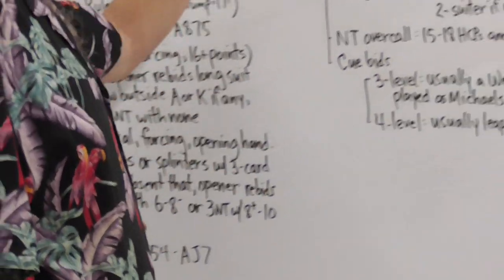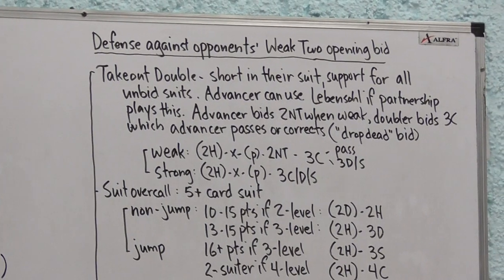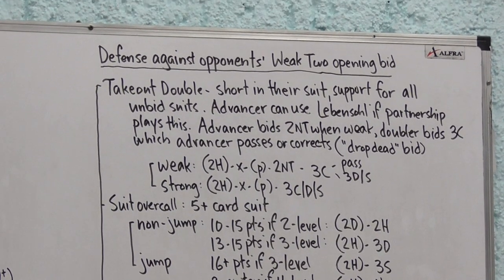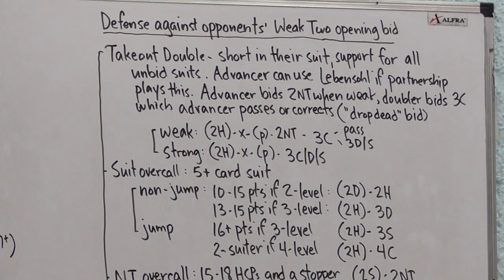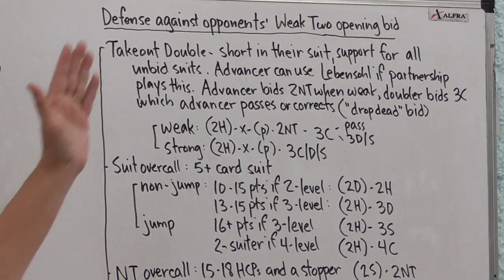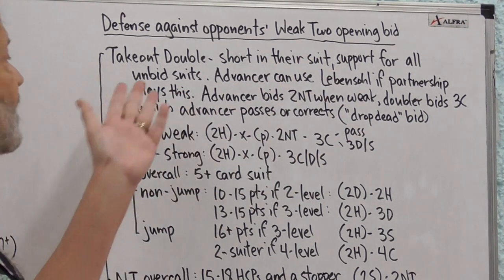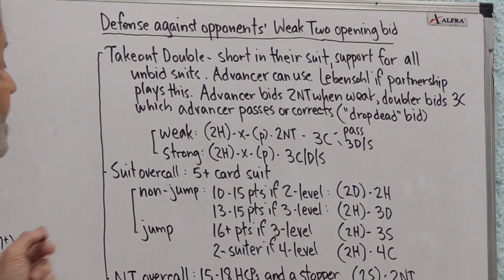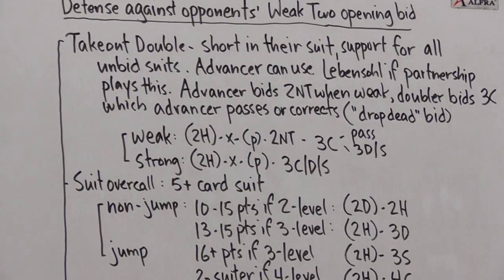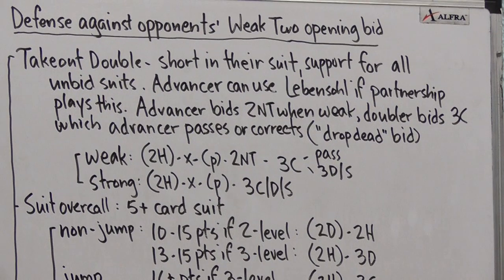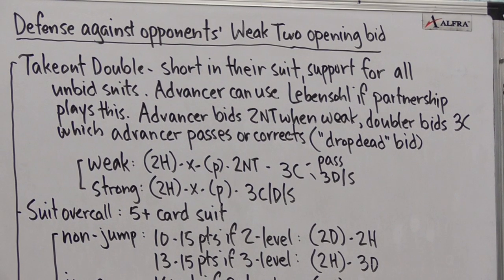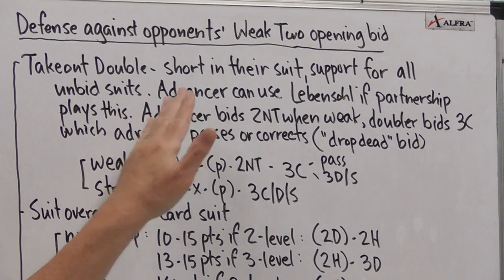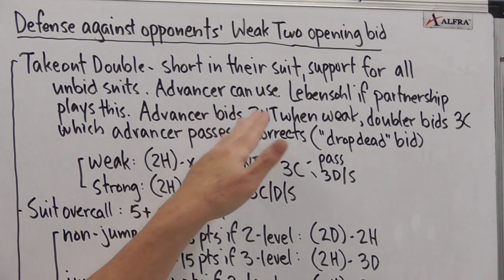Now the last topic we're going to discuss is how we defend against the opponent's weak two opening bid. Your right hand opponent has opened at the two level. One option you have is to make a takeout double, which says that you're short in their suit and you have support for all unbid suits, which is what any takeout double means. Now this is an interesting and easy convention to use, Lebensohl, after takeout doubles of weak twos. If the partnership plays this, this is an option.